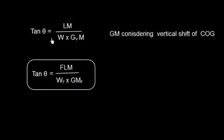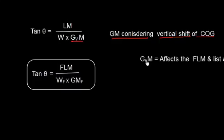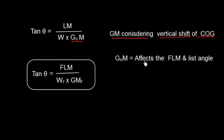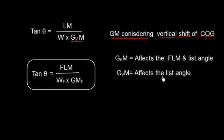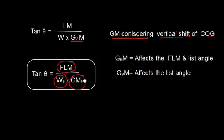Therefore, tan θ can be written as: list moment divided by W × GVM. We consider GVM as GM with the vertical shift of the center of gravity. The horizontal shift affects the final list moment and list angle, while the vertical shift affects GM. So the final formula is: tan θ = final list moment divided by WF × GMF.